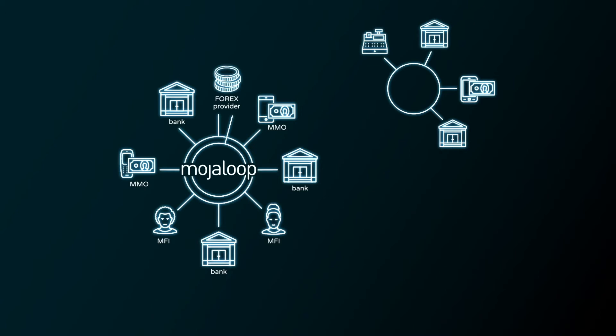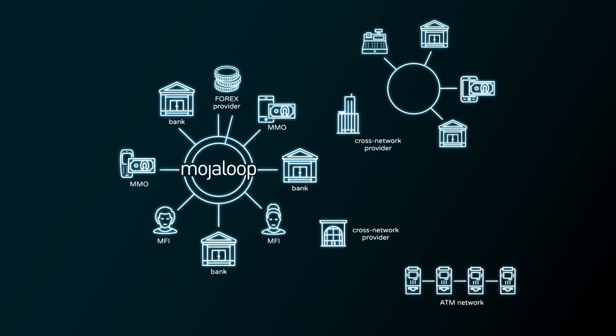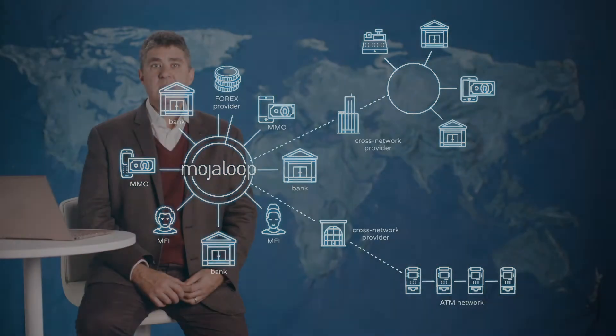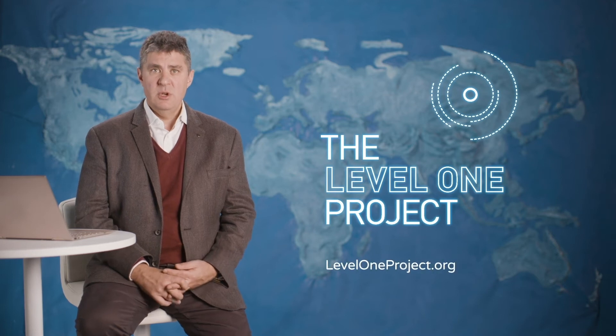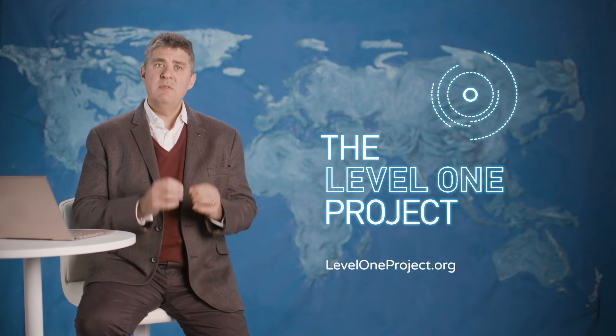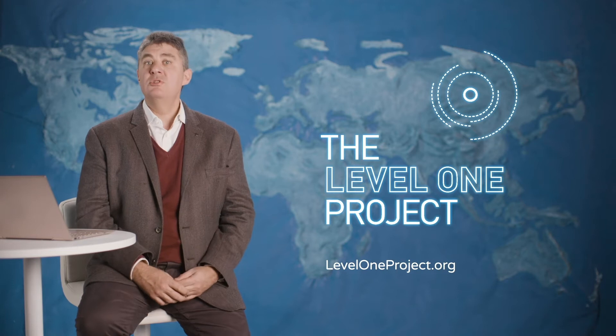There are other networks, including existing ATM and card networks. Mojaloop's cross-network providers can be used to connect these loops together. Mojaloop is an example of a Level 1 project aligned switch, which is a blueprint of what we believe a good interoperable solution should look like today. Level 1 principles come from research that the Bill & Melinda Gates Foundation did into the characteristics of good financial service rails.